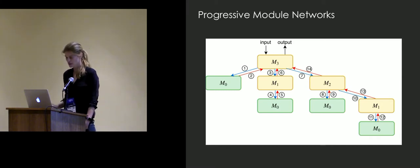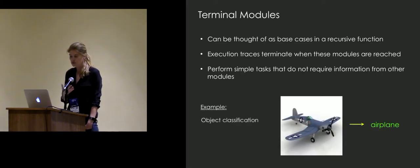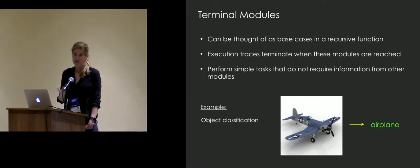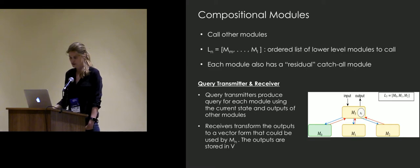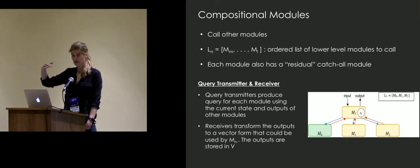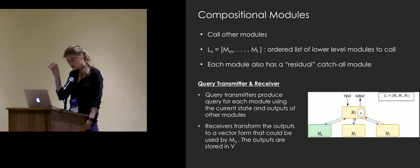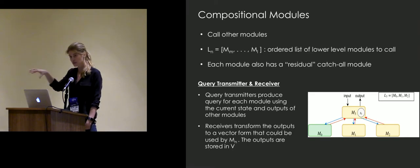The terminal modules can be thought of as the base cases in a recursion function — the simplest tasks you can think of. One simple task would be: given a bounding box around an object, classify the class of that object. Attribute classification is another example — naming the attributes of the object inside the bounding box. A compositional module is any other module in this network, defined by having an ordered list of all other existing tasks organized into levels denoting complexity. Each compositional module also has a catch-all residual model for knowledge not represented in the existing library of tasks.